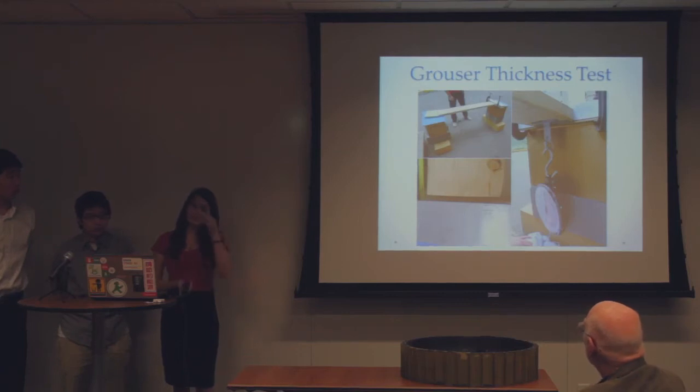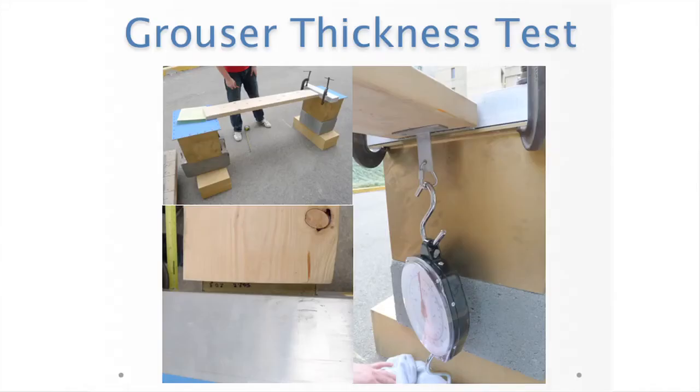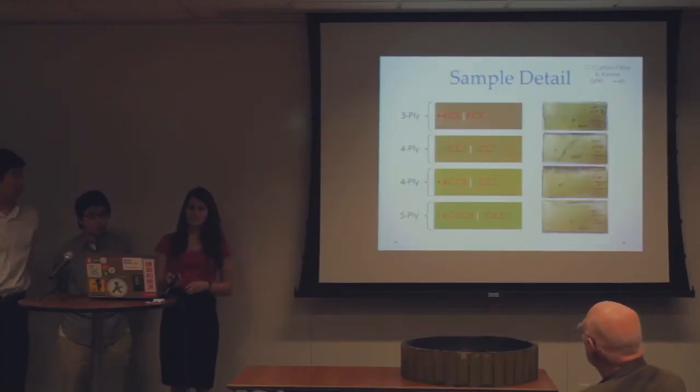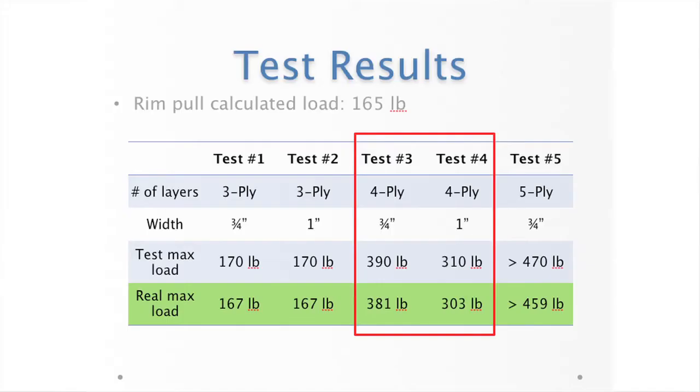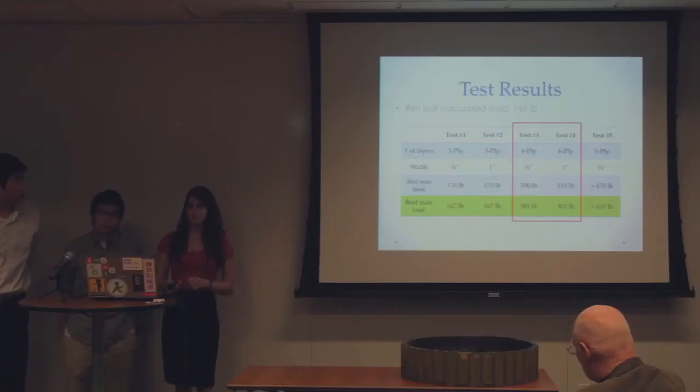So, we did a thickness test before we actually made the whole wheel to determine those four layers. We had multiple different layers - three layers, as well as four layers and five layers. And with the testing rig that I just showed you, we came up with when they broke, under what loading conditions. So, while three layers was sufficient, we did end up going with four to be safe for all of our loading conditions.